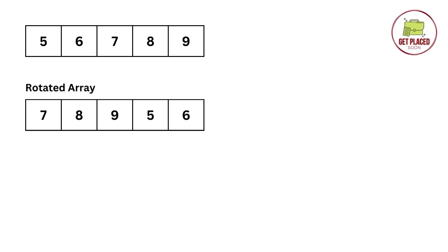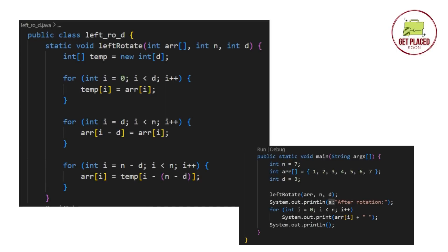In the left rotate function, we declare a temporary array of size d to save 5 and 6. The first for loop runs from 0 to d, saving those elements into the temporary array. The second for loop shifts the last n minus d elements by d places to the left — it runs from i equals d to i less than n, and inside the loop the shift is: array[i minus d] equals array[i]. This shifts 7, 8, 9 two places to the left.